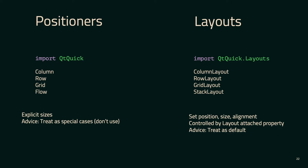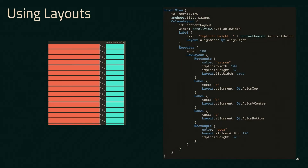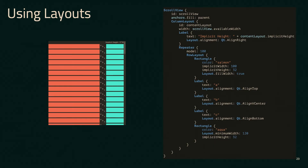This is all done through the Layout attached property. Here's a quick example where in a scroll view I have a ColumnLayout with a series of individual RowLayouts. You can see I'm using the Layout attached property on individual child components to set the alignment, the minimum width — basically giving hints to the layout of how things should stretch when you resize the UI. You may also notice I'm using implicit width and implicit height instead of hard-coded widths and heights, which is a very good practice in general with Qt Quick but especially with layouts.